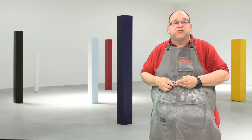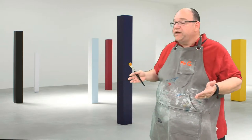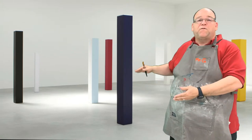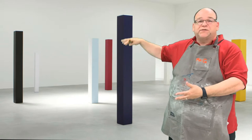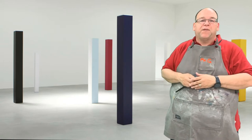And these columns by Ann Truitt, they're just columns that sort of stand there in a bold striking color. And sometimes she would stripe them with a couple of colors. But it was all about this form, this elegant prism, just sort of standing there. And what does it do to you? What do the colors remind you of?